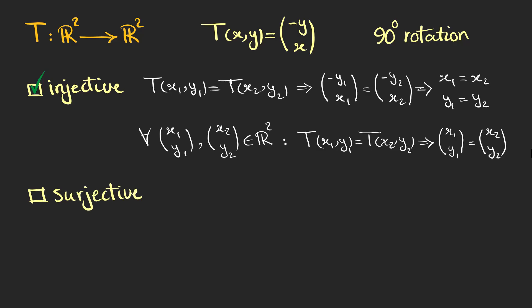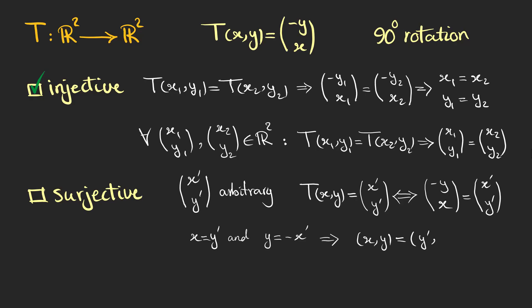What about being surjective? If we take an arbitrary vector denoted by two real numbers x prime and y prime, and it is a rotated vector from another vector x and y, we get this expression. So x has to be y prime and y has to be minus x prime, and it suggests that for every two arbitrary real numbers y prime and x prime, we can write this expression. As a result, we can conclude that for every vector in the vector space, there exists a vector in the same space so that when we transform it we get the desired vector, and it shows that this transformation is surjective.